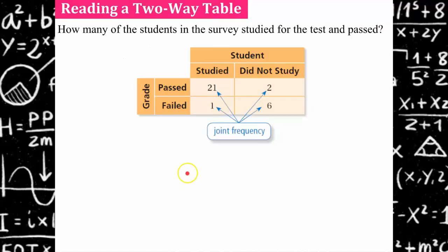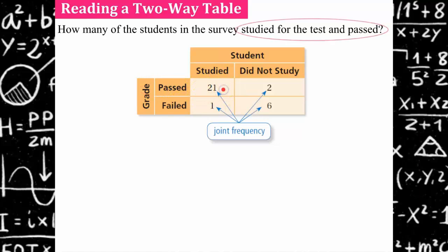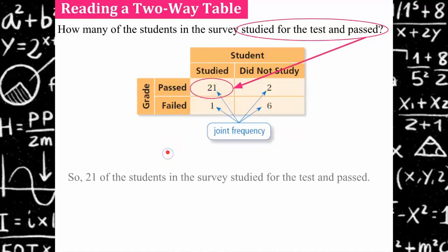Now let's see if you can interpret this. The question asks: how many students in the survey studied for the test and passed? When we look at the studied column and go to passed — 21 students studied and passed their test.